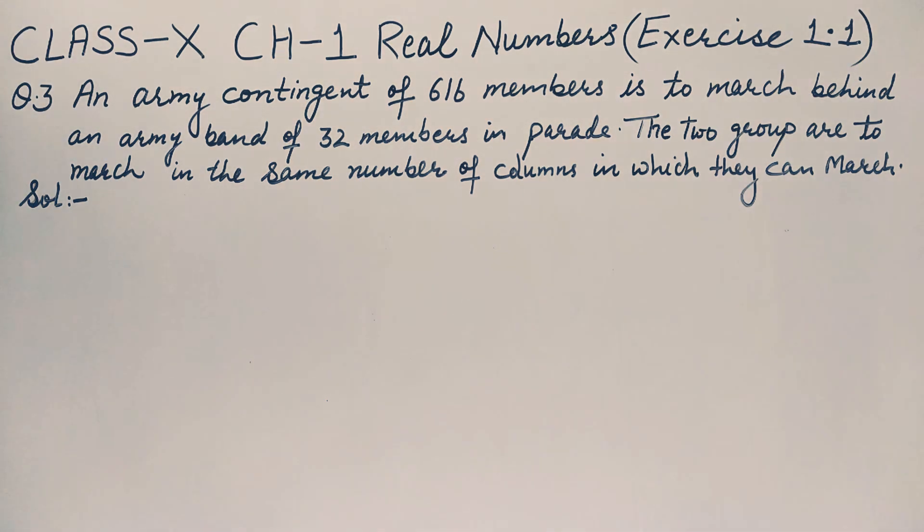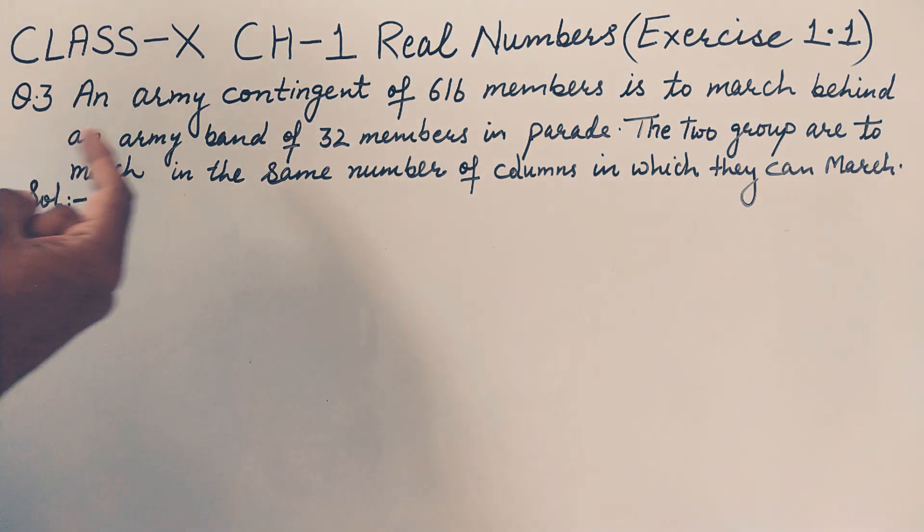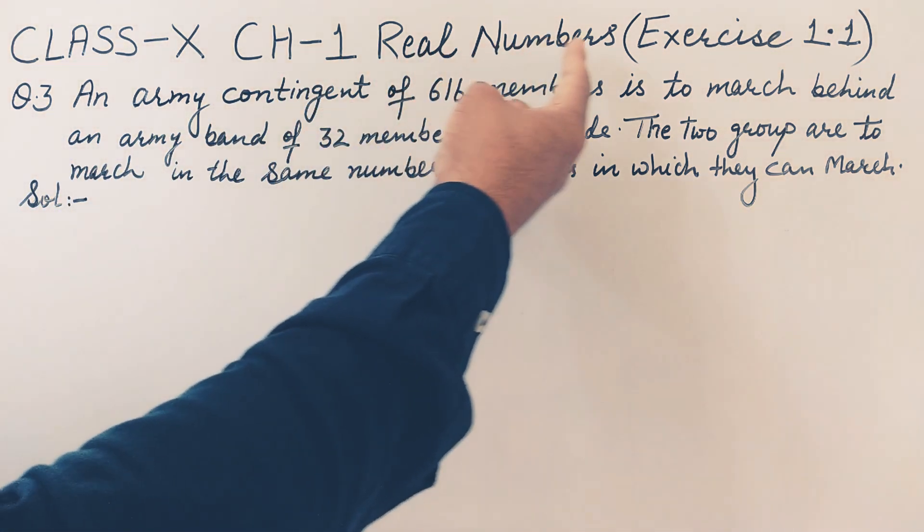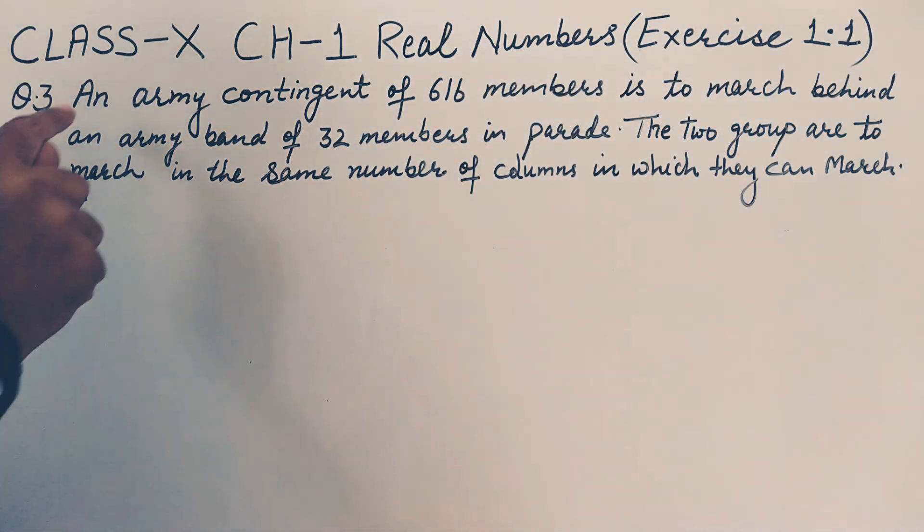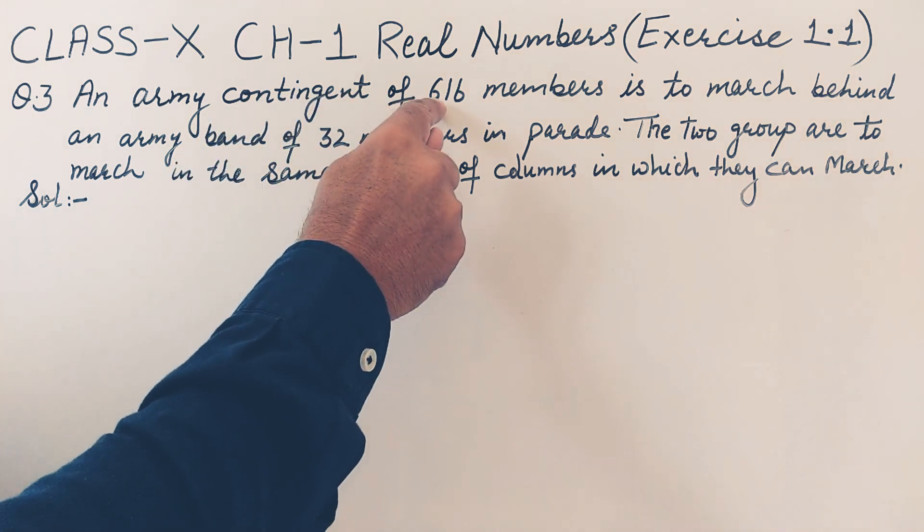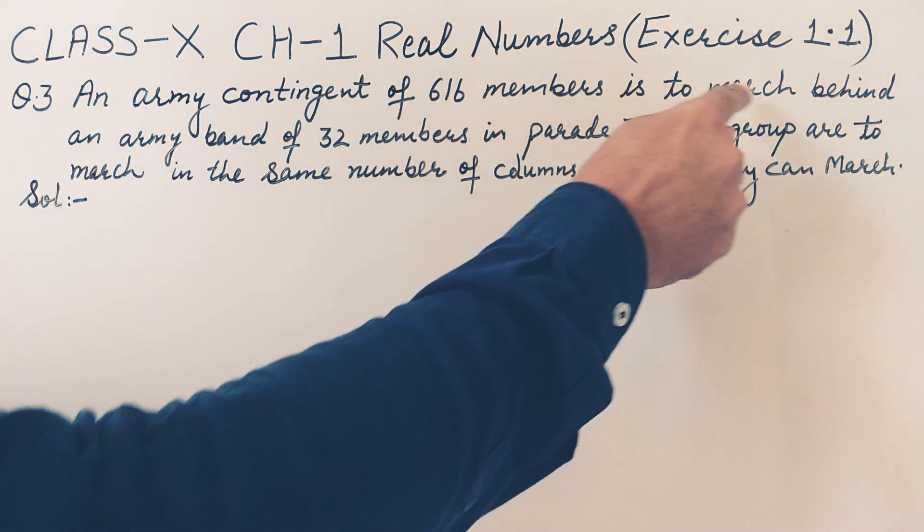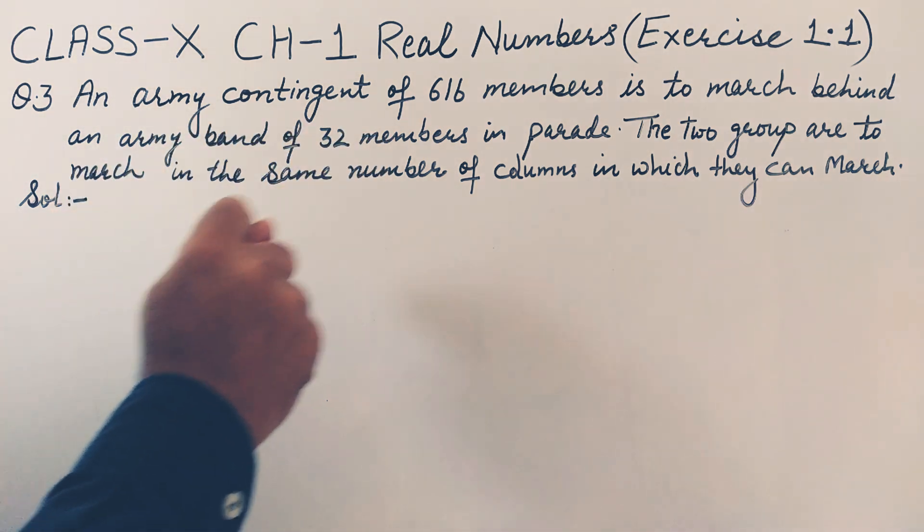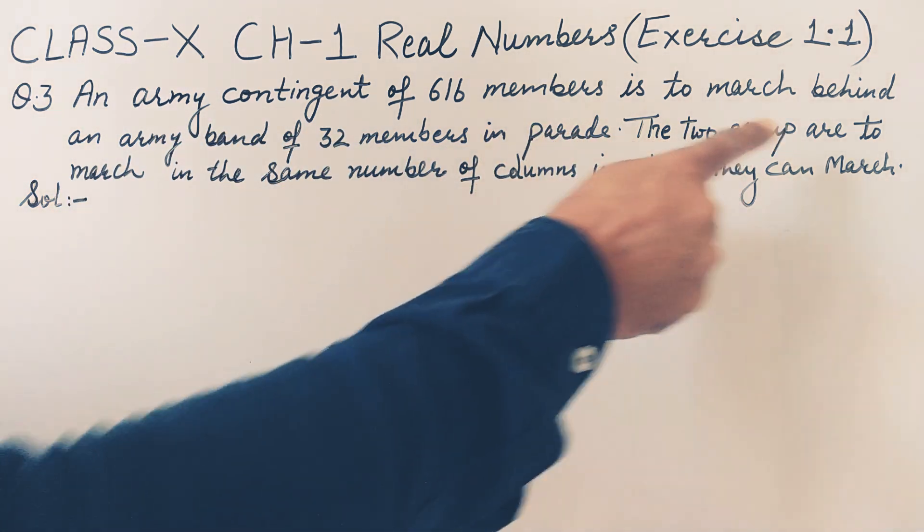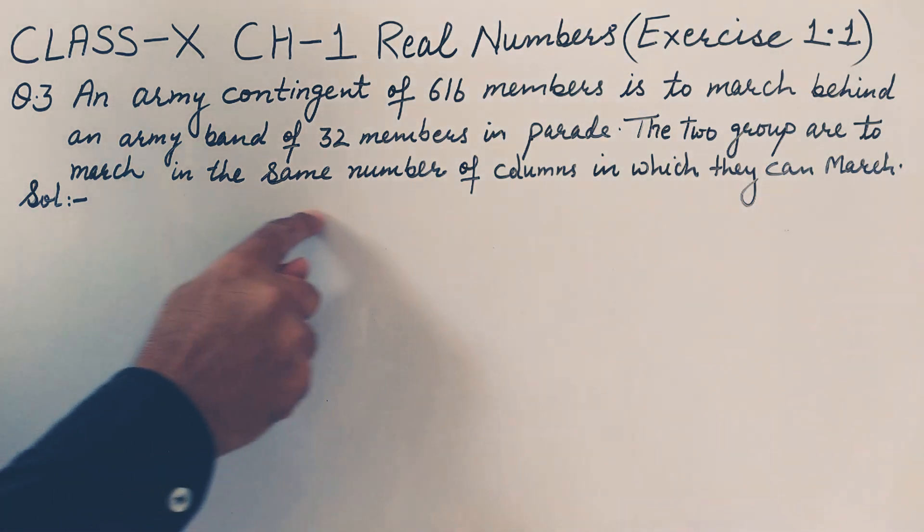Hello dear students, welcoming this maths class. In this class we'll do this question from Class 10, Chapter 1 Real Numbers, Exercise 1.1, Question 3. An army contingent of 616 members is to march behind an army band of 32 members in a parade. The two groups are to be marched in the same number of columns in which they can march.